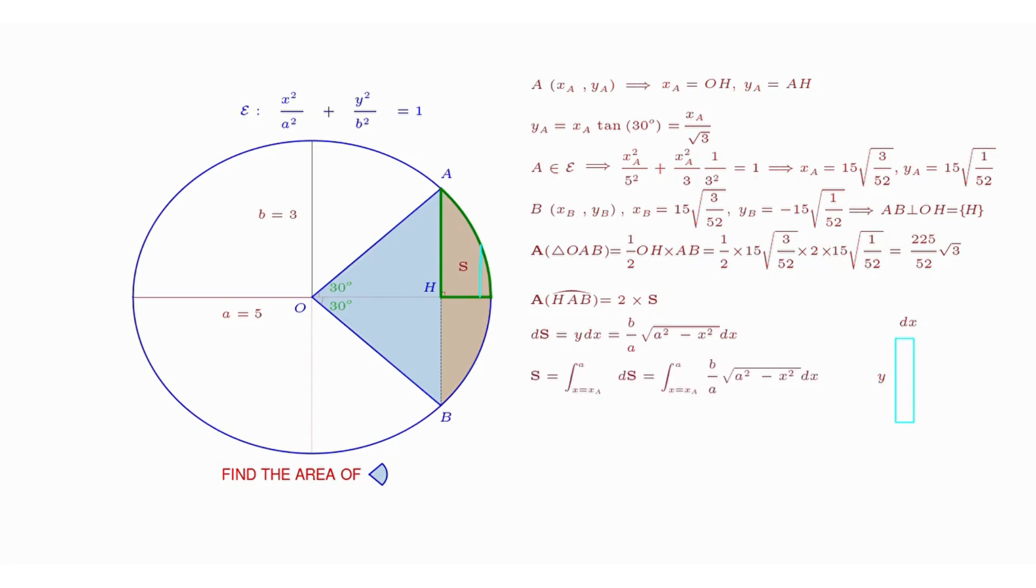Accordingly, area S is written as the integral of dS for x ranging from x_A to a. To calculate this integral, we change the variable from x to theta by the relationship x equals a times sine of theta. Replacing this relationship in the formula of S, we obtain a simpler formula that depends on theta, ranging from theta_A to pi divided by 2. Here theta_A is the arcsine of x_A divided by a.